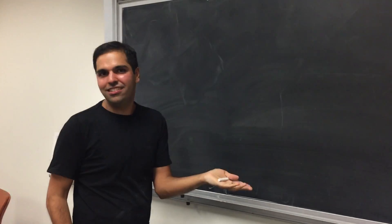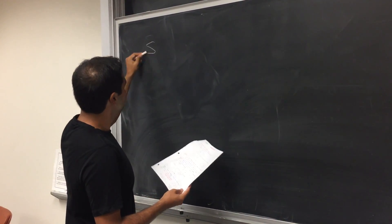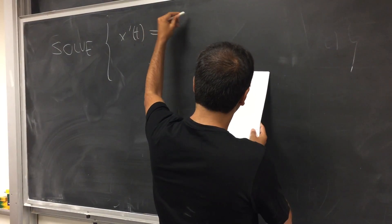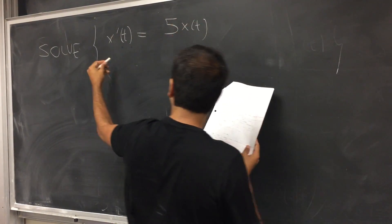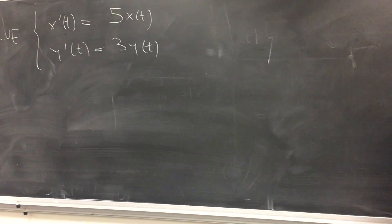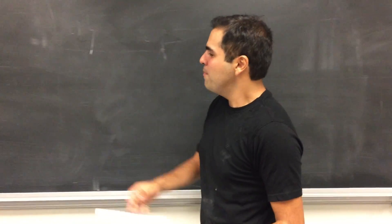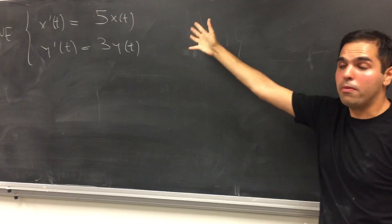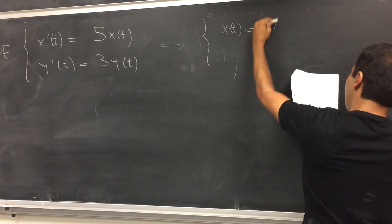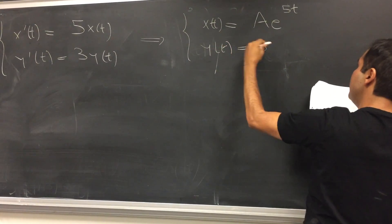Let's start with a very easy problem. You might wonder why we're spending time on it, but you'll see why. Let's solve the following system of differential equations: x prime of t equals 5x of t, and y prime of t equals 3y of t. Since those two variables are uncoupled, the solution is simply x of t equals a·e^(5t) and y of t equals b·e^(3t).